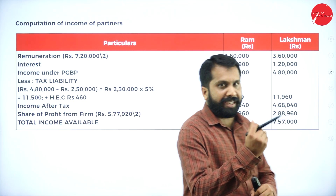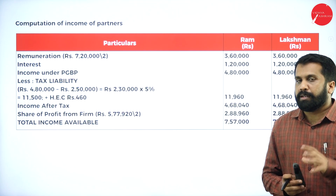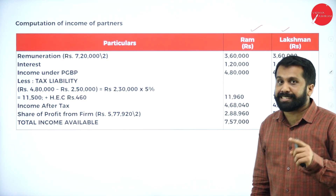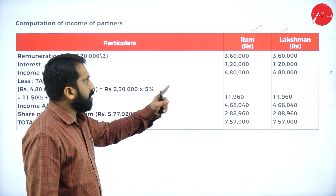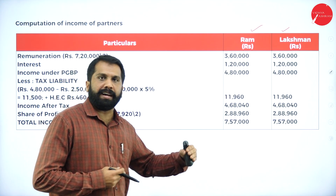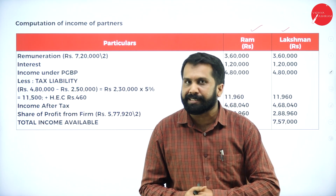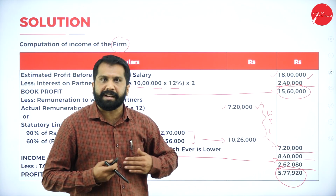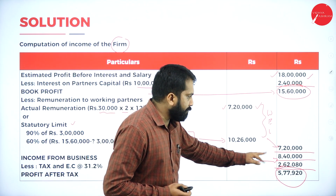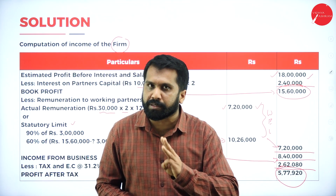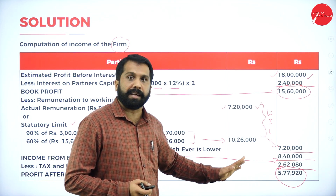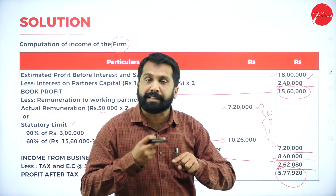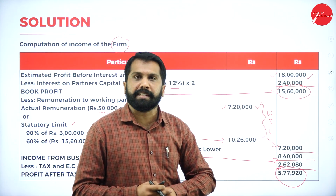Once the overall partnership tax is calculated, we must also calculate individual tax for each partner. For example, myself and friend XYZ both started a partnership business. Our total income is 8 lakh 40,000. The firm pays tax at 31.2%, but each partner must also calculate their individual tax payable separately.